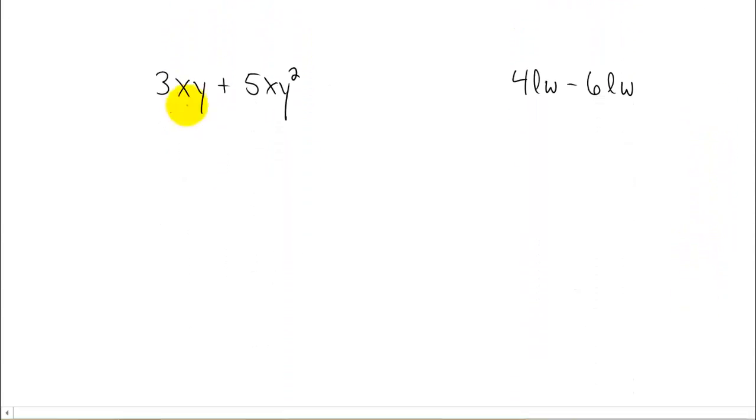3xy plus 5xy squared. Now they look pretty similar to each other, but technically they're not like terms. The reason they're not like terms, even though they have the same variables, is because there's a different power on this variable in this term.